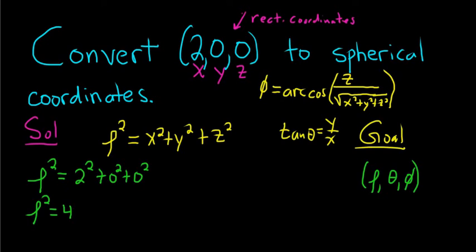To get rid of the square, we simply take the square root of both sides. We end up with rho equals plus or minus 2. Rho is a distance, so it's just 2. So our rho is equal to 2.